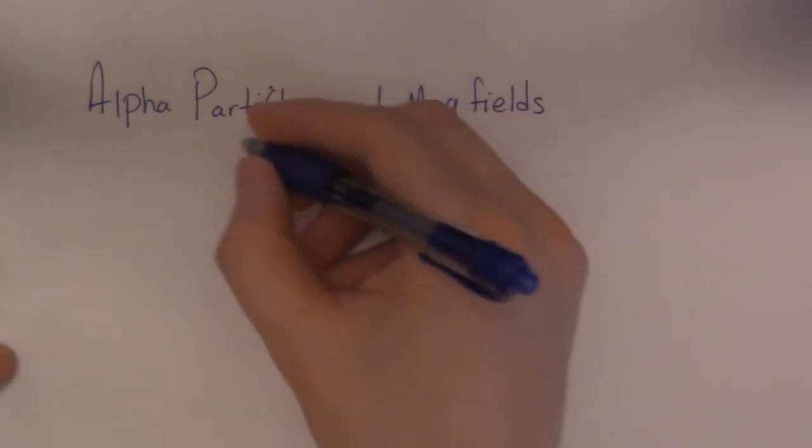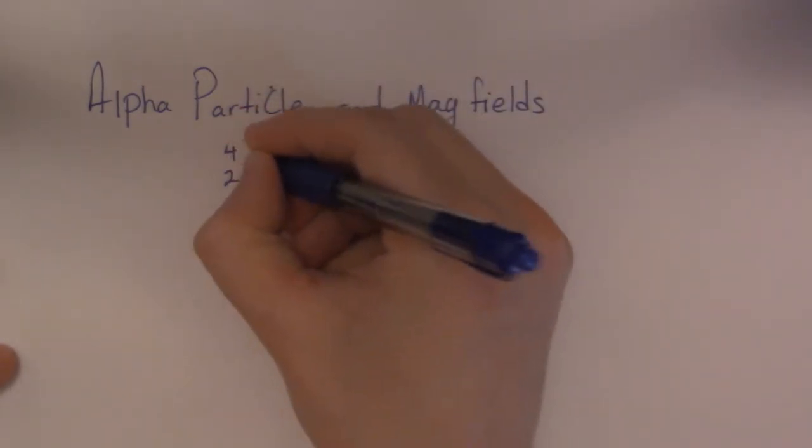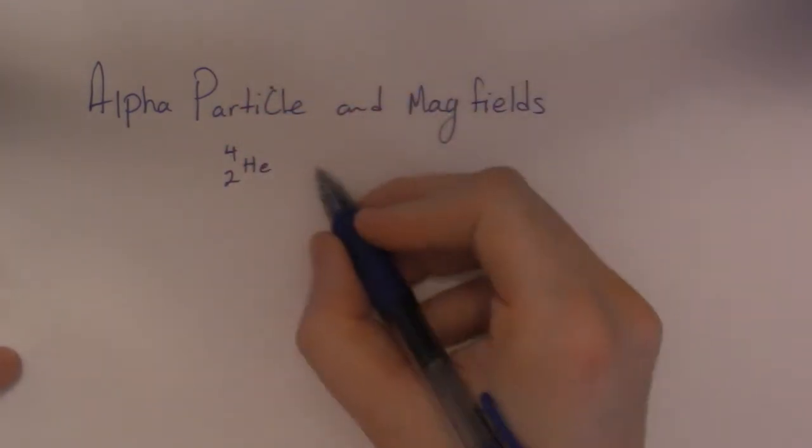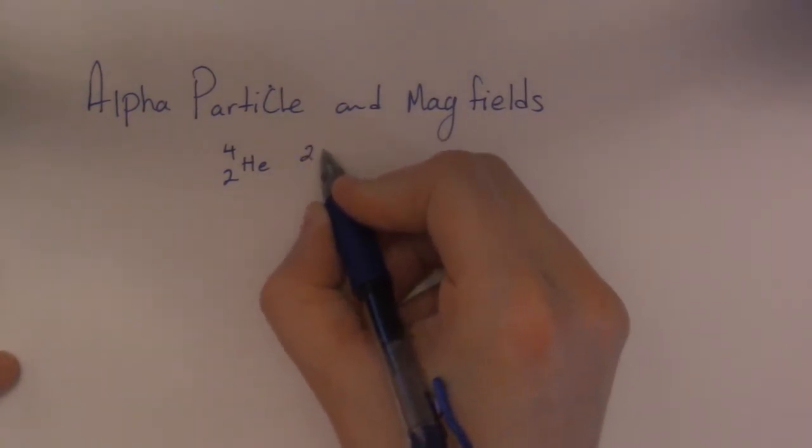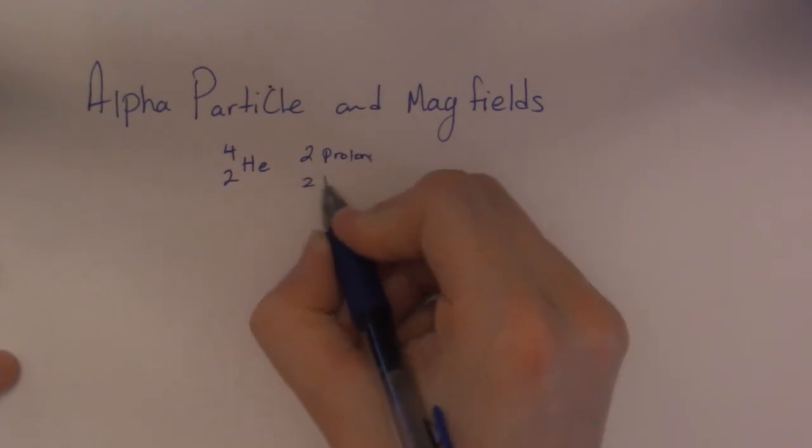The first thing I'm going to do is tell you what an alpha particle is. An alpha particle is a helium nucleus, essentially. So it has two protons and two neutrons.